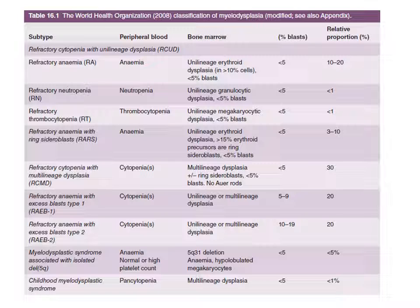Refractory anemia with ring sideroblasts: I am explaining these things because in your book under morphology you will see these terms. In peripheral blood, we will see anemia with low hemoglobin. In bone marrow, we can see unilineage erythroid dysplasia. If we do iron staining for this bone marrow smear, more than 15 percent of the erythroid precursors are ring sideroblasts — we can see iron particles forming a partial or complete ring around the nucleus of erythroid precursors. Blast count is still less than five percent. Three to ten percent of patients may be from this category.